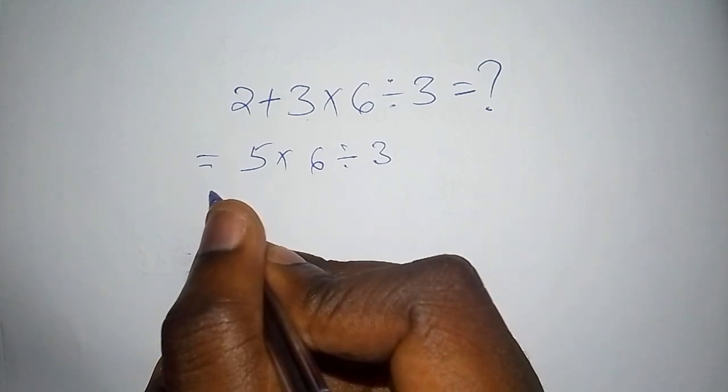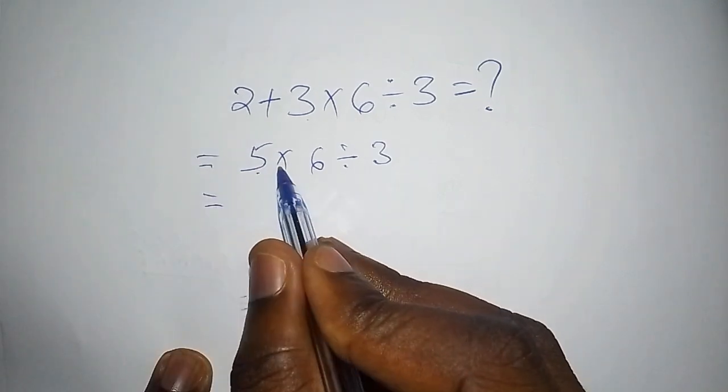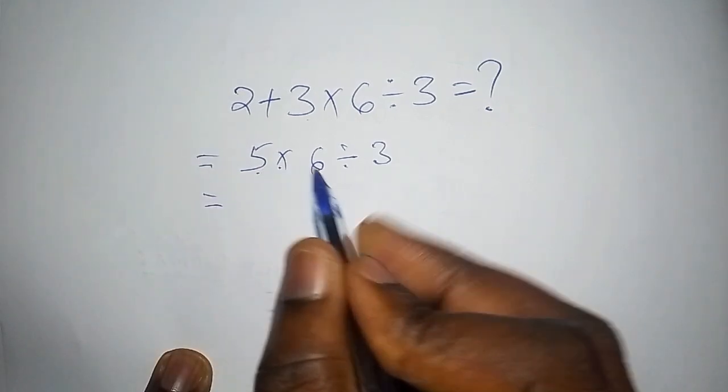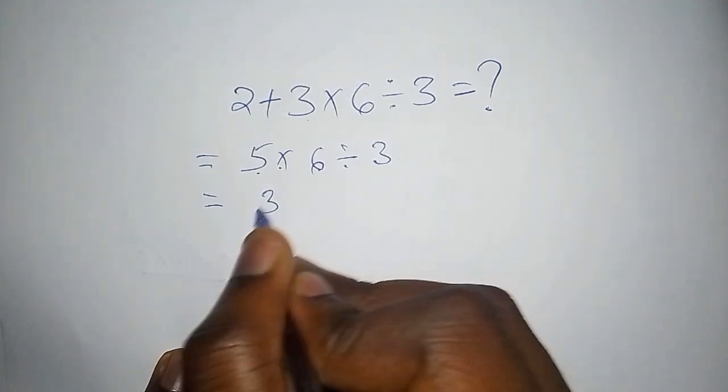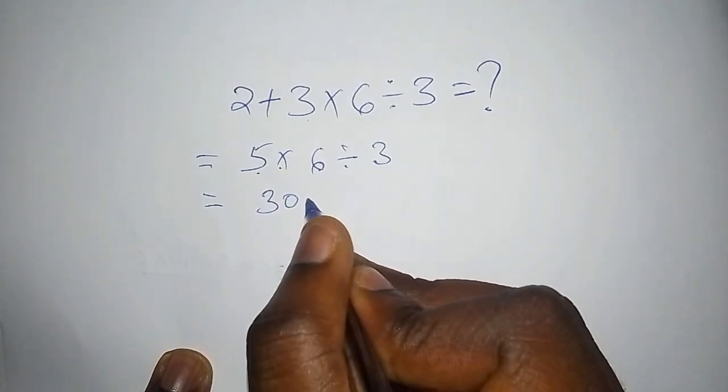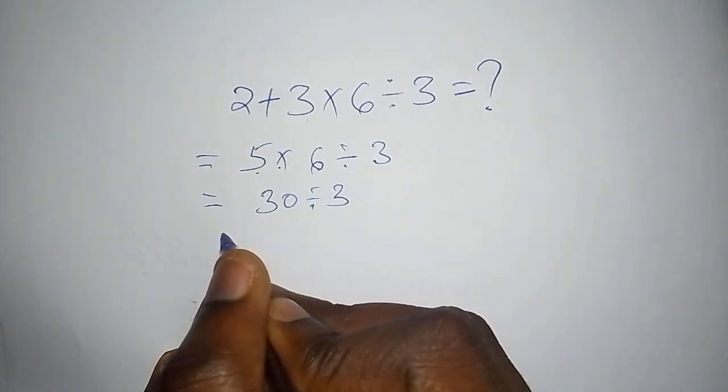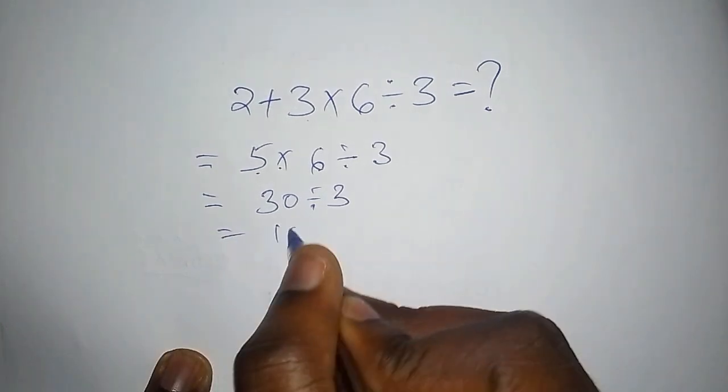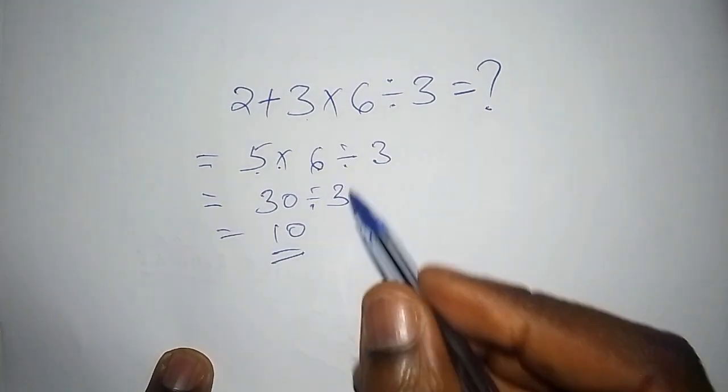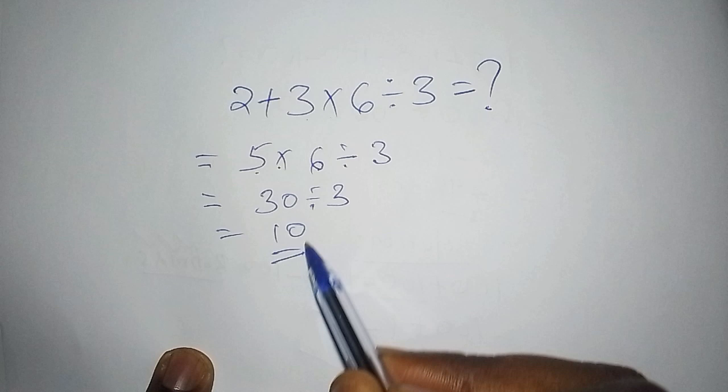From there, your second step might be 5 multiply by 6 is 30, and 30 divide by 3. Your final answer is 10. Now once you work out these operations like this, the answer you end up with shall be automatically wrong.